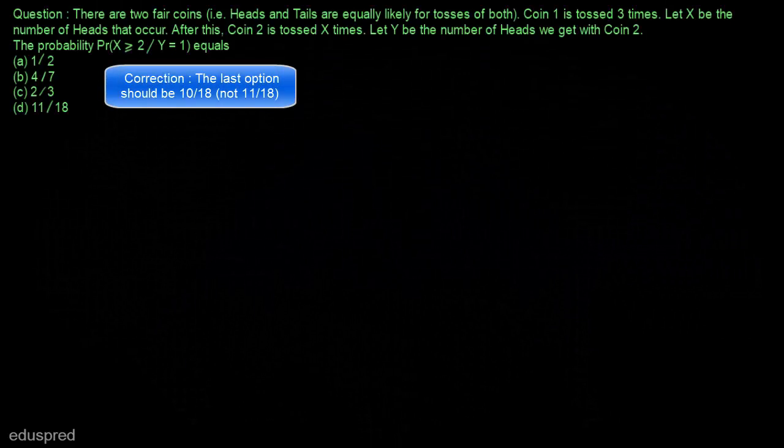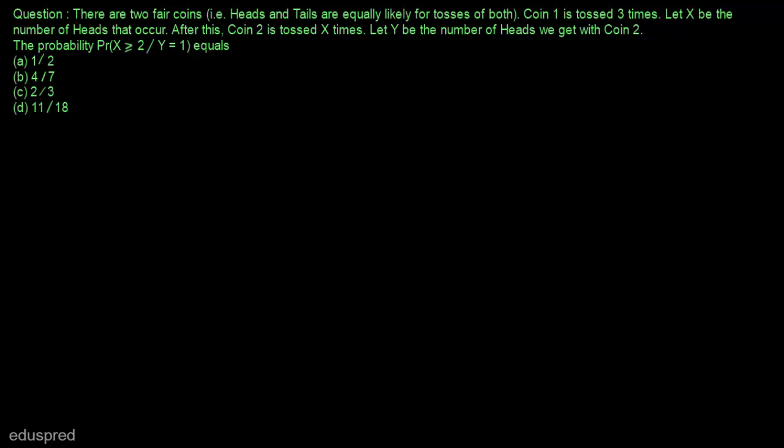In this video, I am going to solve this question. There are two fair coins, and by fair coins we mean that heads and tails are equally likely for tosses of both. Coin 1 is tossed 3 times; let X be the number of heads that occur. After this, coin 2 is tossed X times; let Y be the number of heads we get with coin 2, and we have to find the probability that X is greater than or equal to 2 given that Y is equal to 1.